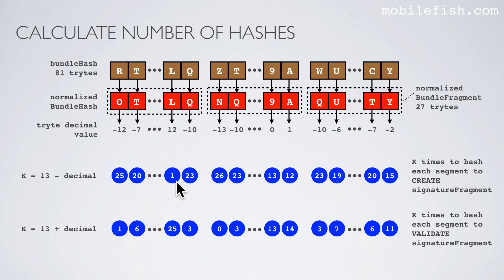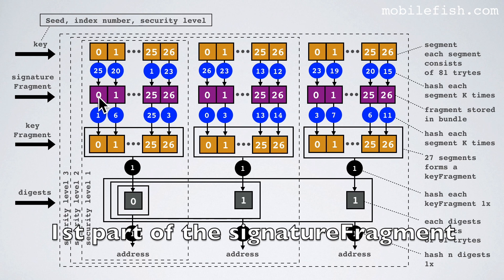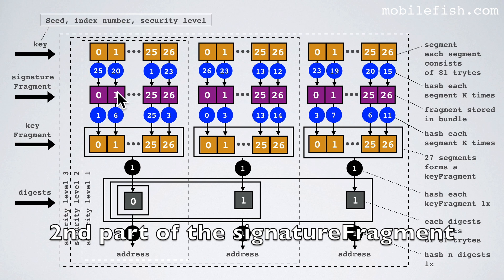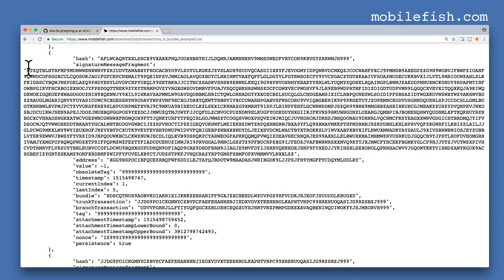For example the numbers 25, 20, 1 and 23. This key segment needs to be hashed 25 times to get this signature fragment. This key segment needs to be hashed 20 times to get this signature fragment. You need to do the same for all key segments. These 27 segments together form the signature fragment, which consists of 2187 trits. This signature fragment is the same signature fragment you store in the transaction bundle. The signature message fragment field can hold a message but it also can hold a signature, and it holds 2187 trits.